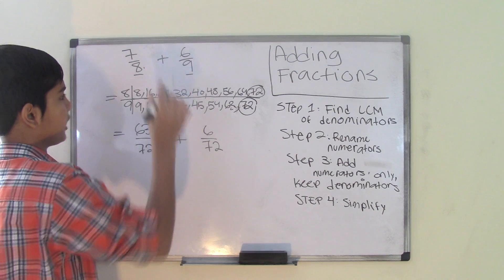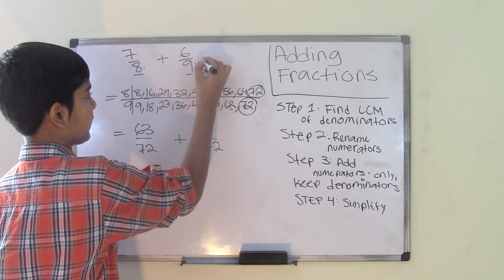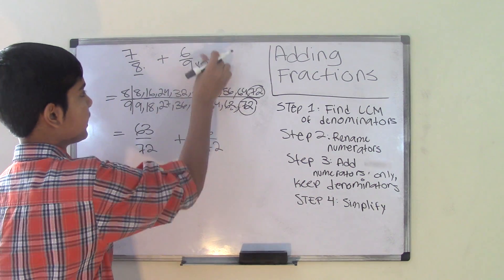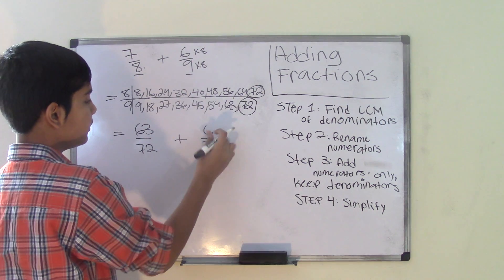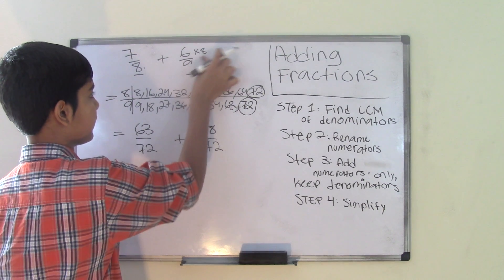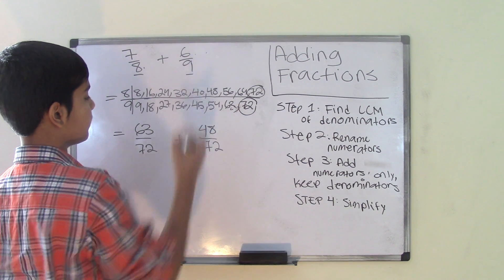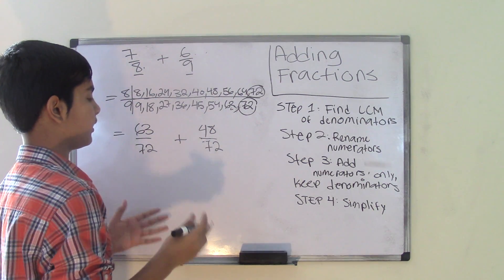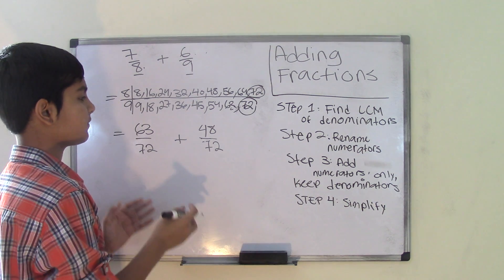Now if I multiply 9 times 8 to get the 72, then I have to multiply 6 with 8 as well. So 6 times 8 is equal to 48. Now that I have two equivalent fractions for each of these fractions,